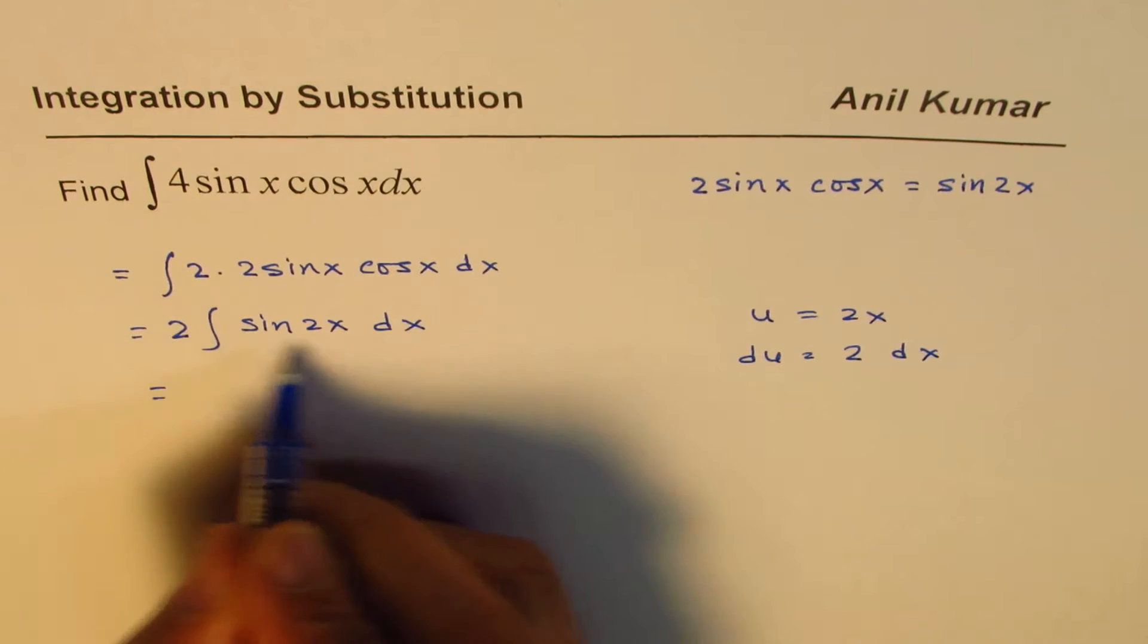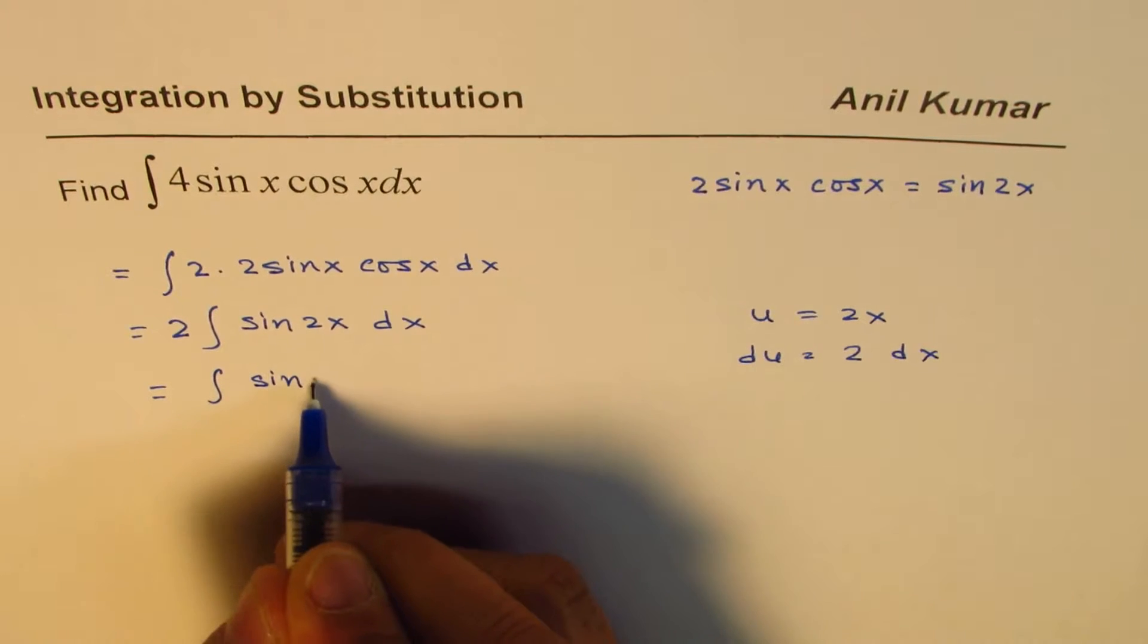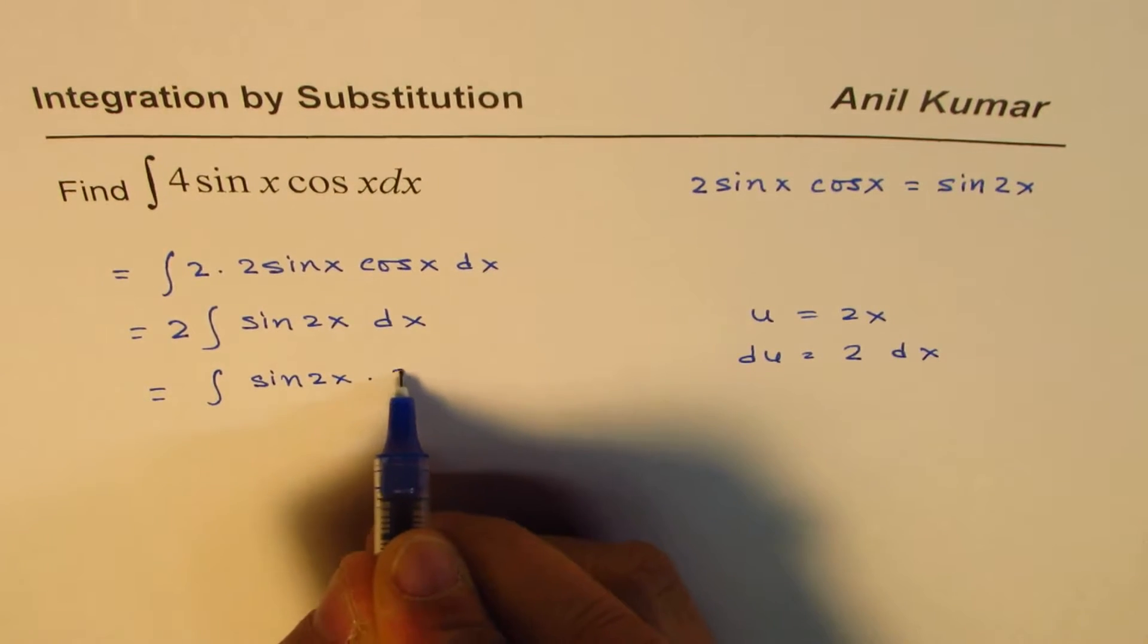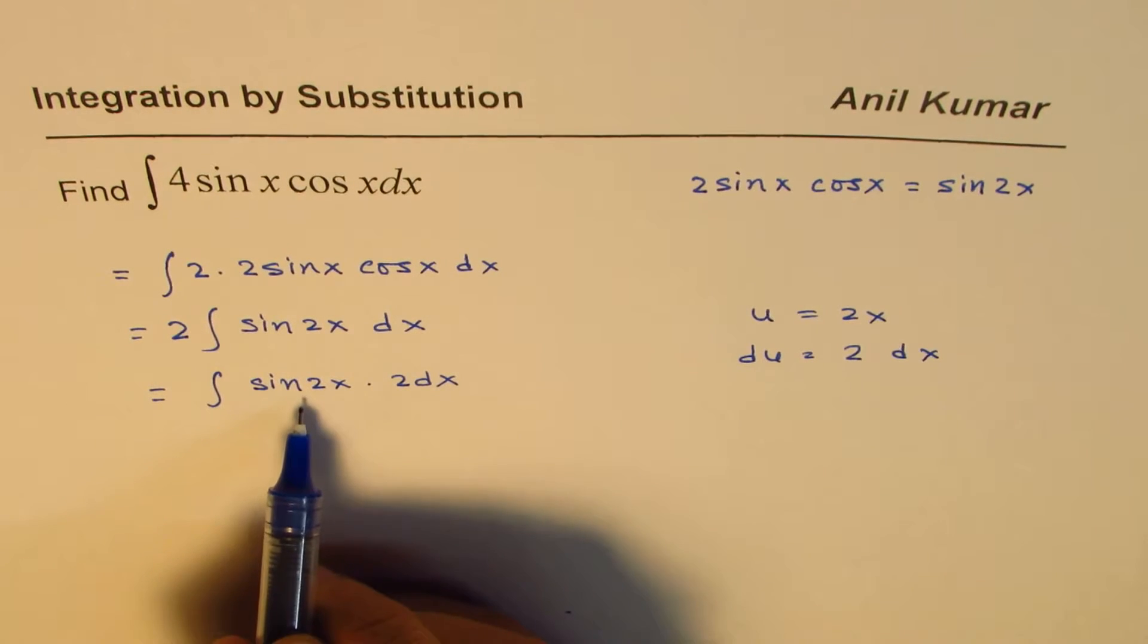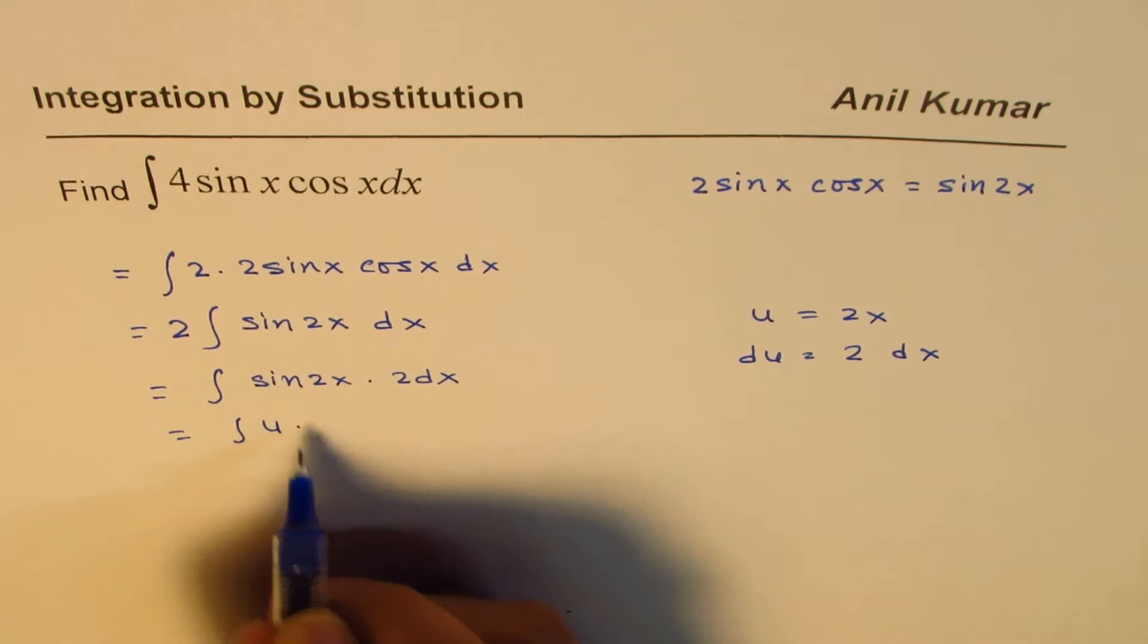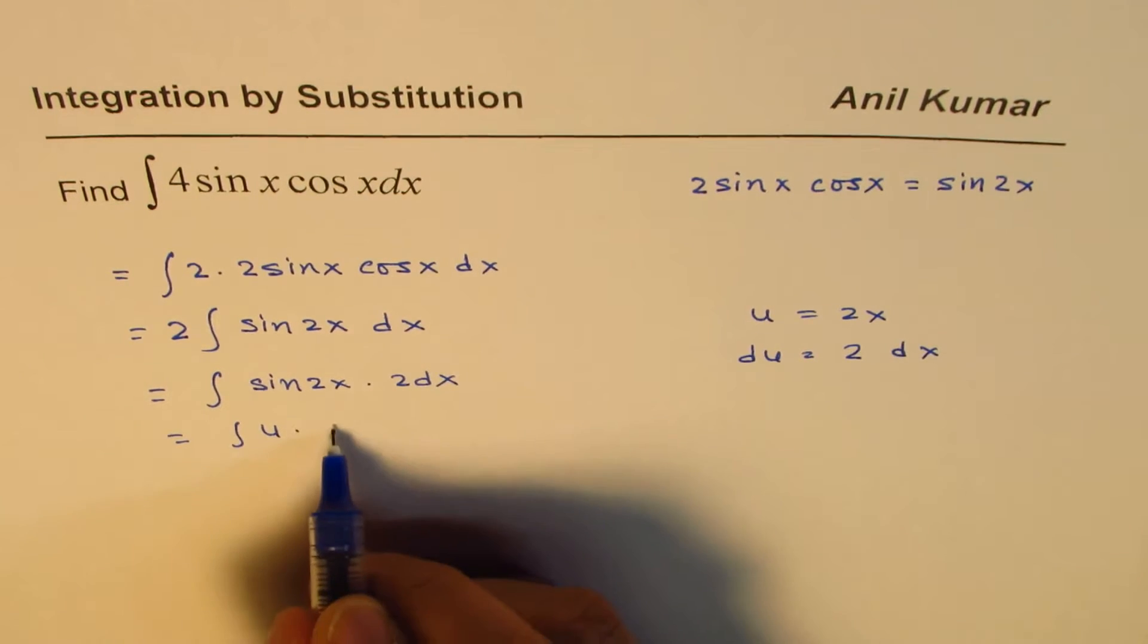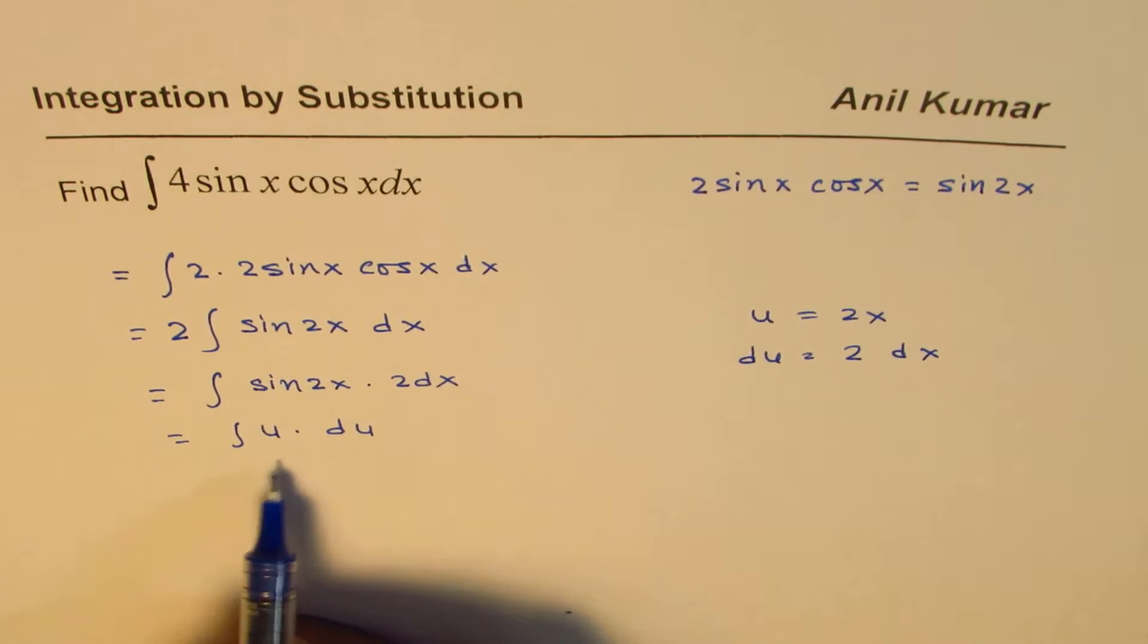Well, I could have written this 2 with 2dx. So let me rewrite this. What we get here is sin(2x)·2dx, right? So we could write like this. And now I'll substitute u for the 2x, and 2dx as du.